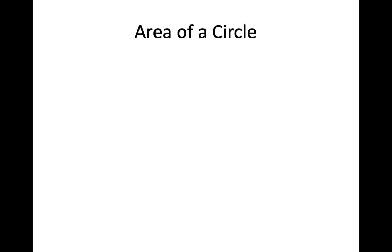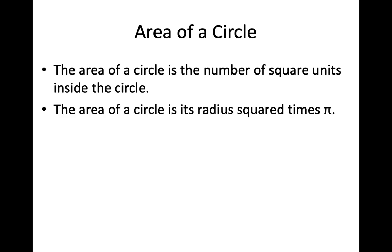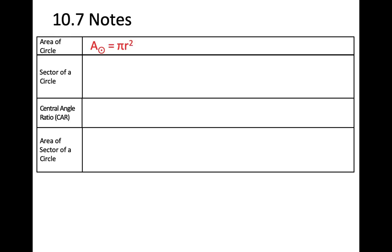We've talked about circumference — now let's talk about the area of a circle. The area of a circle is the number of square units inside the circle. The formula for the area of a circle is A equals πr².